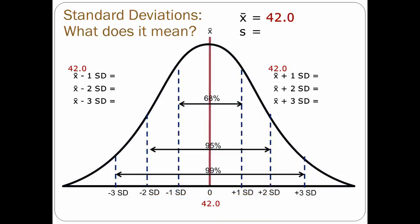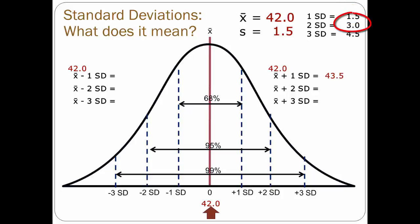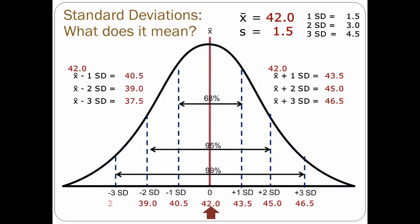Let's see what happens with the same mean but a smaller standard deviation, such as 1.5. The mean is still in the center. Adding one standard deviation: 42 plus 1.5 is 43.5. Two standard deviations: 42 plus 3 is 45. Three standard deviations: 42 plus 4.5 is 46.5. We can plot these at plus 1, plus 2, and plus 3 standard deviations, and do the same for the negatives. Now you can see the scores are much closer together — less variation. This is the value of standard deviation.